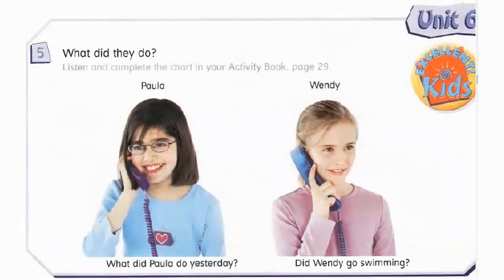Unit 6 Pupil's Book Activity 5 and Activity Book Exercise D. Excellent, kids! What did they do? Listen and complete the chart in your activity book.